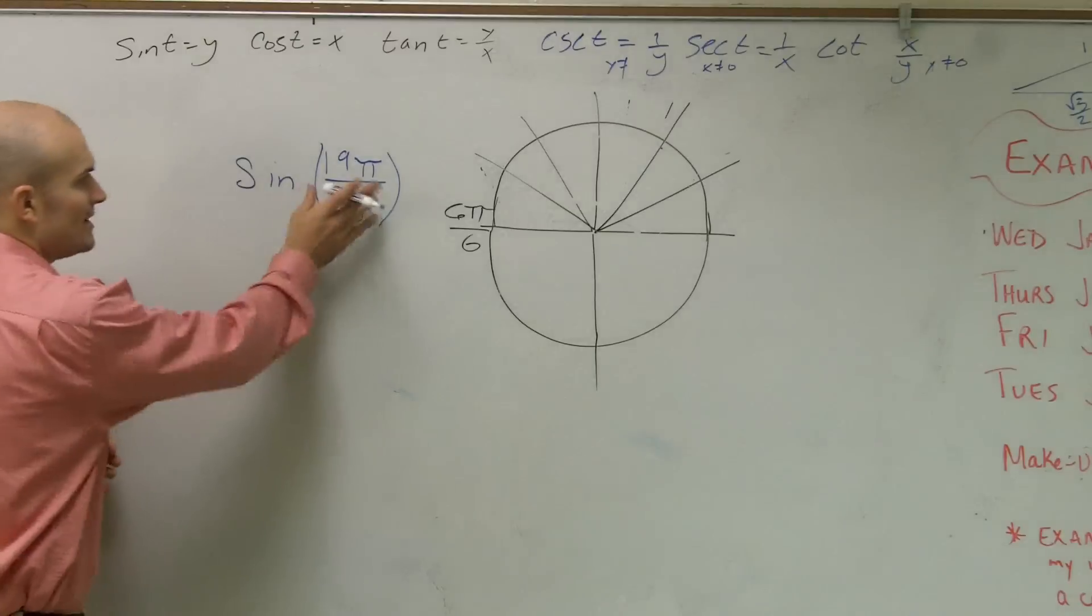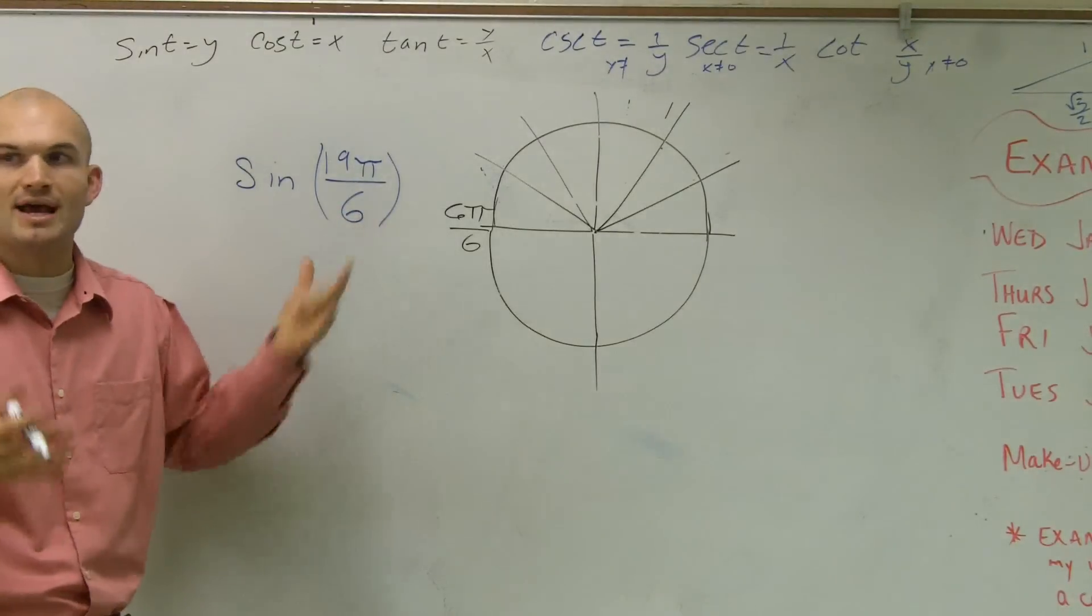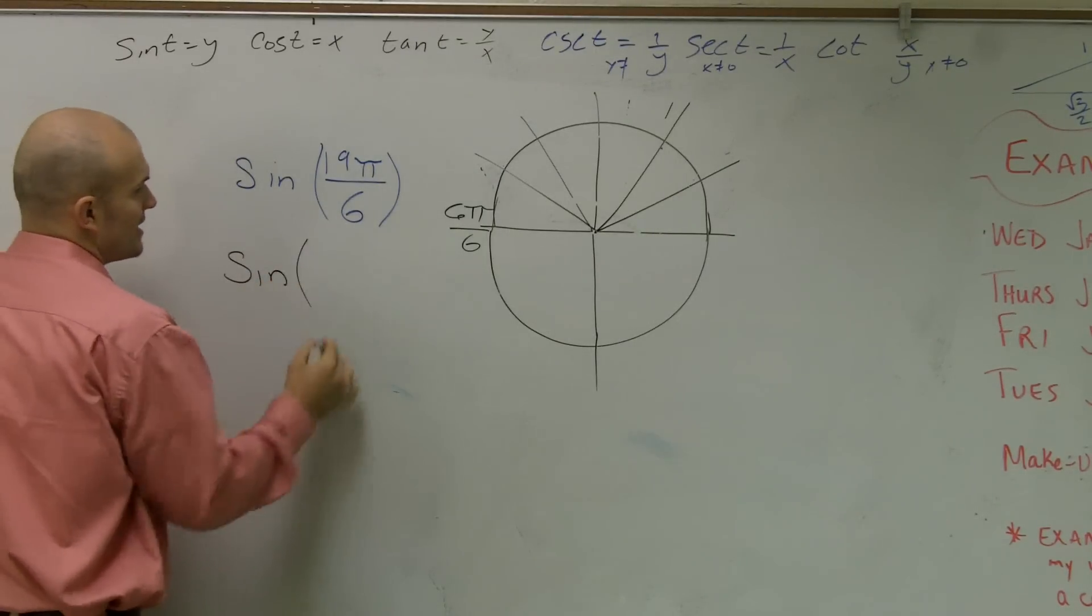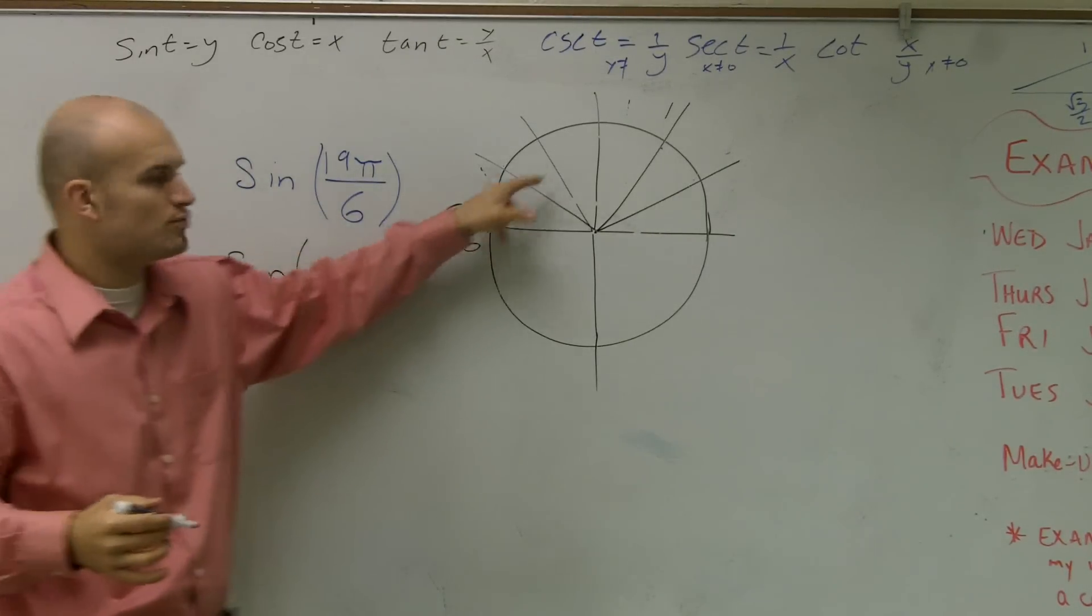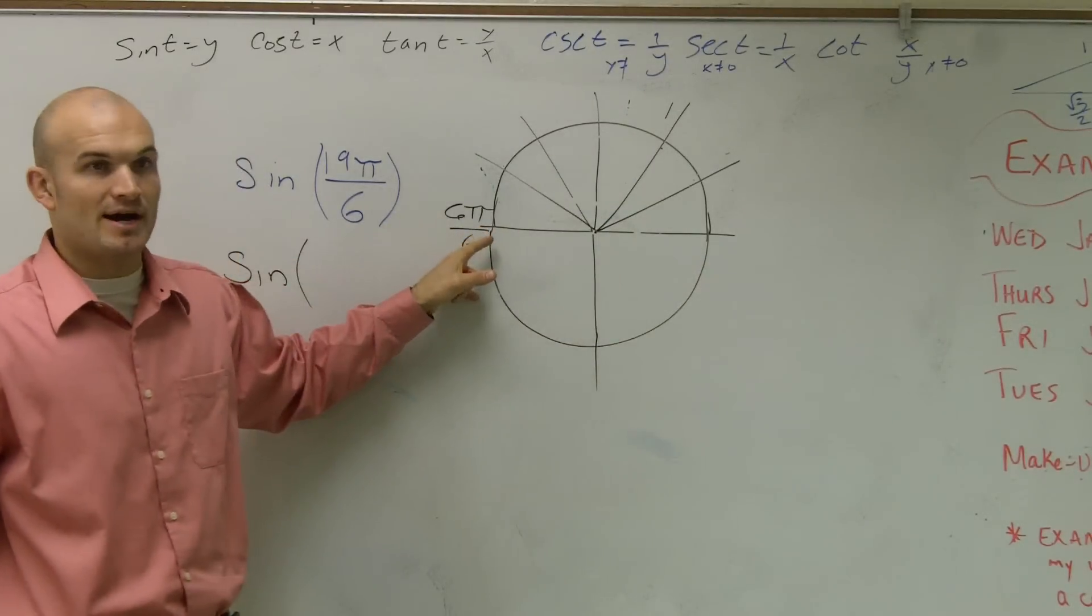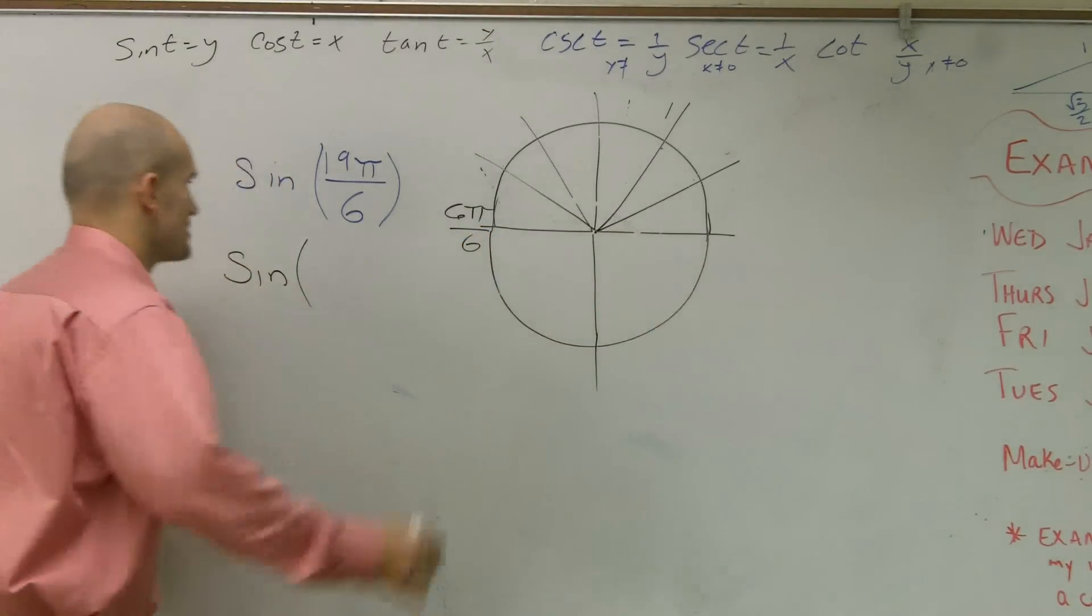So what we're going to do is we're going to rewrite this problem as what we call a period. So what I want to say is, I want to break this up. What is one revolution going around? Half of it's 6π over 6. What's going all the way around? 12π over 6.